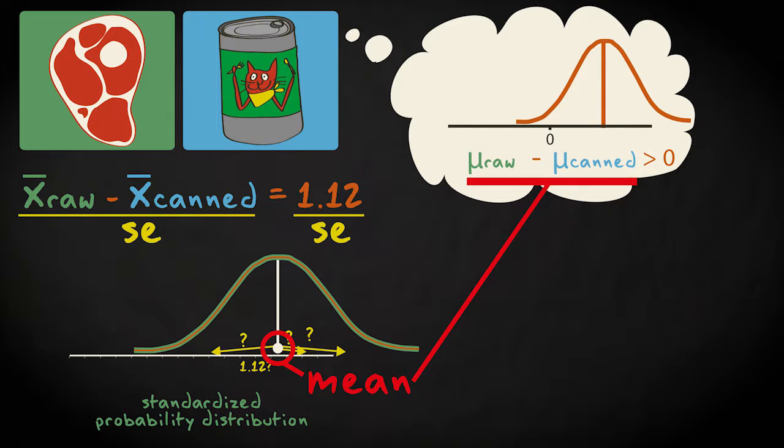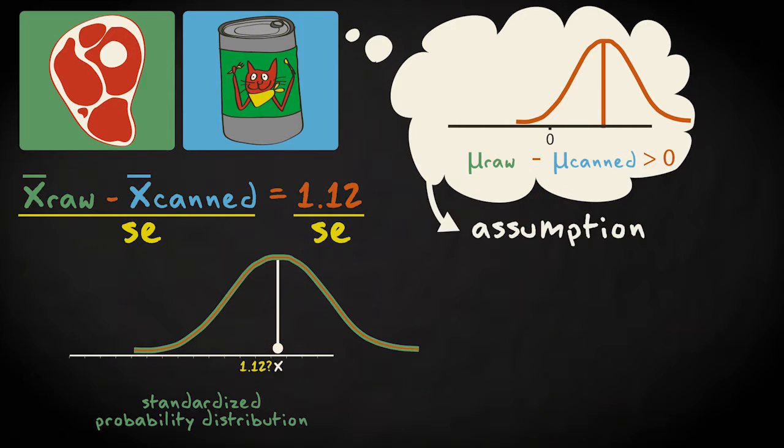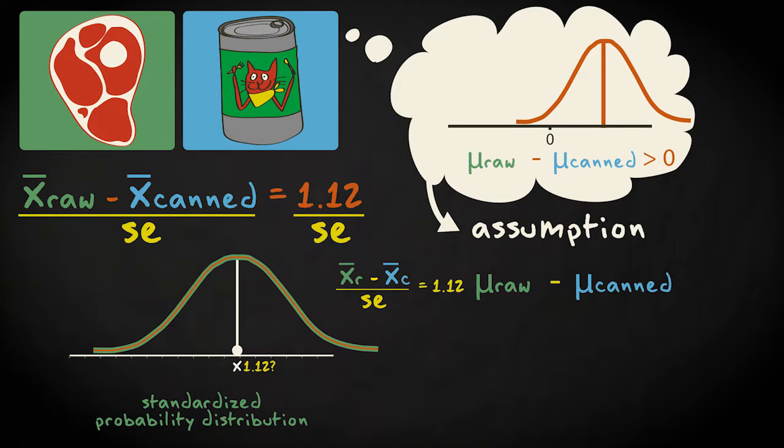The only way to pin it down is to make assumptions about its exact location. Which means, at best, we can calculate the probability of finding a sample difference of 1.12, assuming the true population value is exactly x. But what is the value of x? The true difference could lie at 10, or 4, or minus 1. We don't know. As long as we can't pin it down, we can't calculate probabilities.